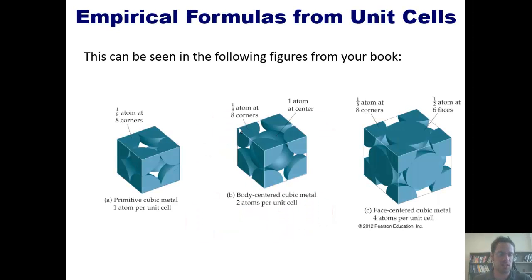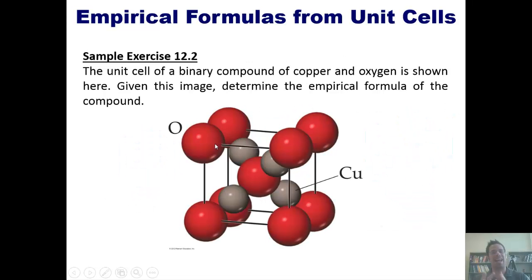As I showed in this slide, anytime you have a sphere located at one of the vertices of your unit cell, there's only one-eighth of that sphere that's actually inside the unit cell. Therefore, only one-eighth of each of the spheres at these vertices counts towards the empirical formula.